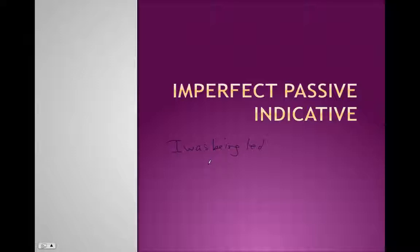Just like with the present passive indicative, all we're going to do is we're still going to take our augment, our epsilon augment, we're going to take our present stem. We're just going to use different endings. We're going to use what are called secondary endings, just like we did with the imperfect active.